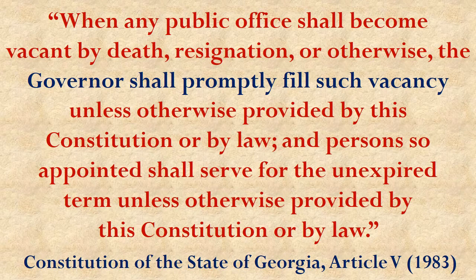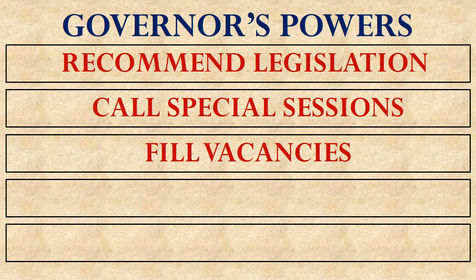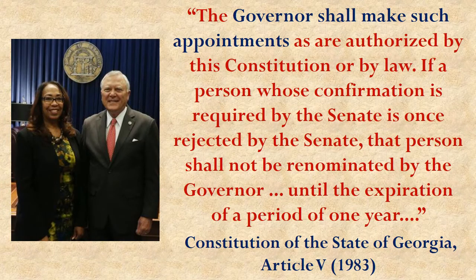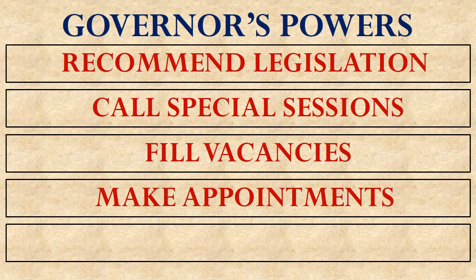The governor's eighth power is to fill vacancies within the executive branch. If some public official has to leave office — they die, resign, or whatever — and that position is open, the governor can fill it temporarily to complete the unexpired term until someone else is elected or chosen. His ninth power is to appoint people to various offices — not those elected separately in the plural executive, but positions created by legislation passed by the General Assembly or by the Constitution itself, where the governor is assigned to make appointments as an original matter, not just fill a vacancy temporarily.